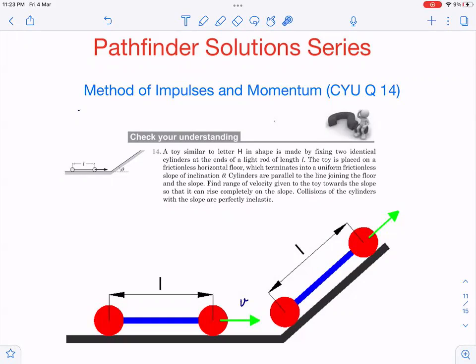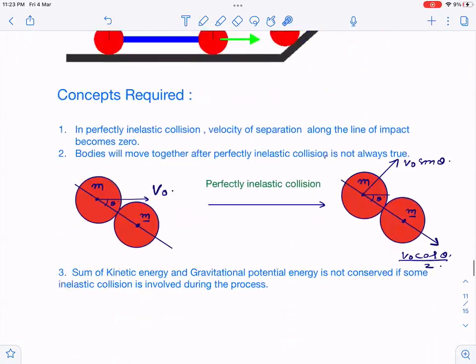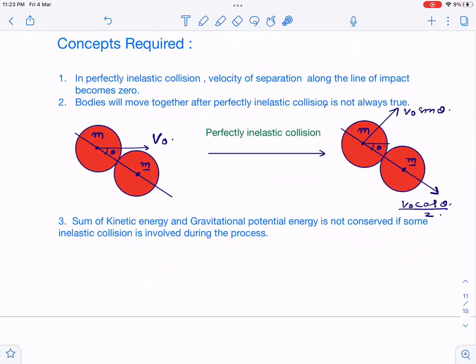Let's see now the concepts required and how we start solving this question. The idea is to explain these questions in a simple way so that you can understand and solve similar questions. First concept: In perfectly inelastic collision, velocity of separation along the line of impact becomes zero.